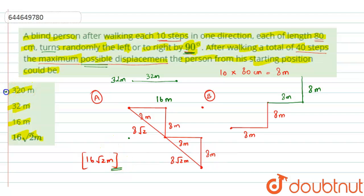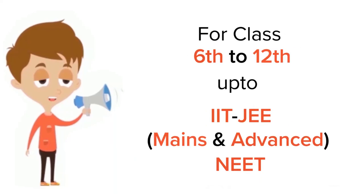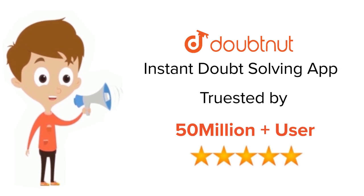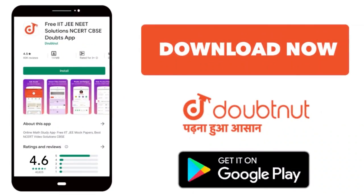So out of the four options A, B, C, and D, the maximum displacement possible for the blind person would be 16√2 meters. For class 6 to 12, IIT JEE and NEET level, trusted by more than 5 crore students — download the DoubtNut app today.